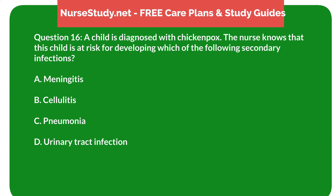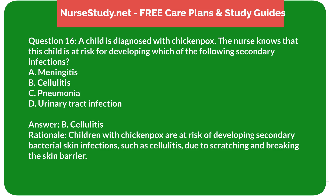Question 16: A child is diagnosed with chickenpox. The nurse knows that this child is at risk for developing which secondary infection? A) meningitis, B) cellulitis, C) pneumonia, D) urinary tract infection. Answer: B) cellulitis. Rationale: Children with chickenpox are at risk of developing secondary bacterial skin infections such as cellulitis due to scratching and breaking the skin barrier.